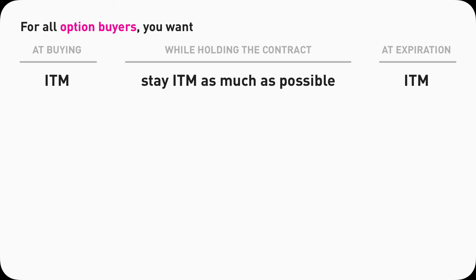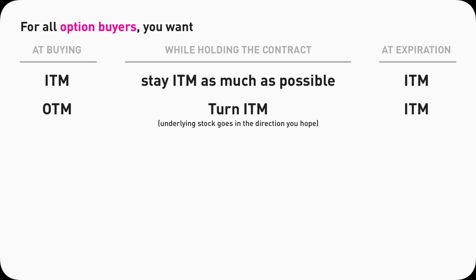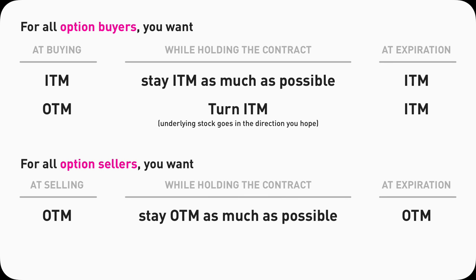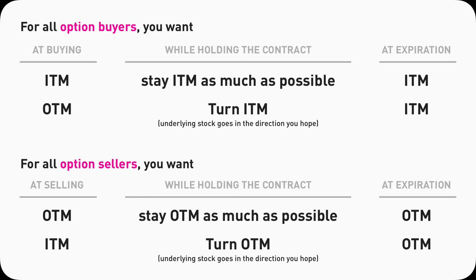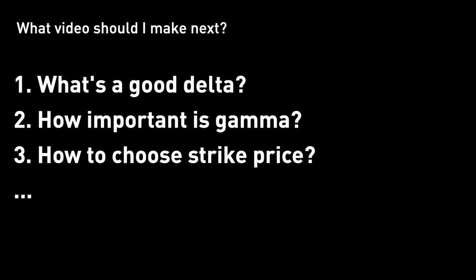We've covered quite a lot today. As a key takeaway: as option contract buyers — whether call buyers or put buyers — you always want to be in-the-money, stay in-the-money as long as possible, and expire in-the-money. You want out-of-the-money to turn into in-the-money at expiration — that's how buyers win. For option contract sellers — call sellers or put sellers — you want it to be out-of-the-money, stay out-of-the-money as long as possible, and expire out-of-the-money. You want any in-the-money contract you sell to turn into out-of-the-money when it expires — that's when sellers win. This constant dynamic and push-and-pull is what maintains equilibrium in the option market.